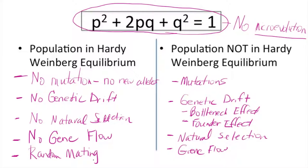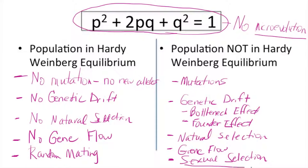The last condition is that there must be random mating — no particular selection in choosing a mate. The opposite, non-random mating, is called sexual selection. For example, birds often choose mates based on the color of feathers, the type of song, or even their ability to build a nest. These are examples of choosing a mate based on certain traits, which would influence the next generation and could certainly cause a change in allele frequencies. That concludes the conditions for Hardy-Weinberg equilibrium.